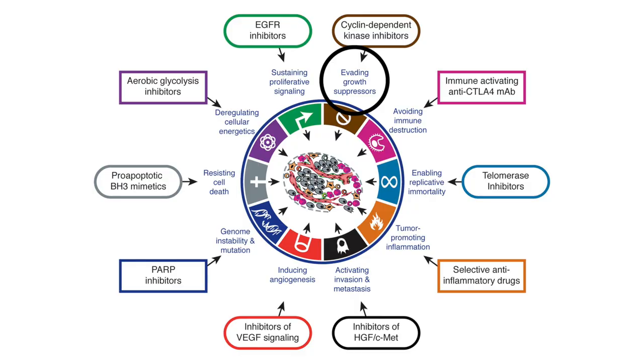Hallmark two is evading growth suppressors. Normal cells receive signals telling them to stop dividing — like pressing a brake in a car. That stop can be temporary or permanent. However, tumor cells ignore those signals; they won't stop when they need to and just keep dividing.